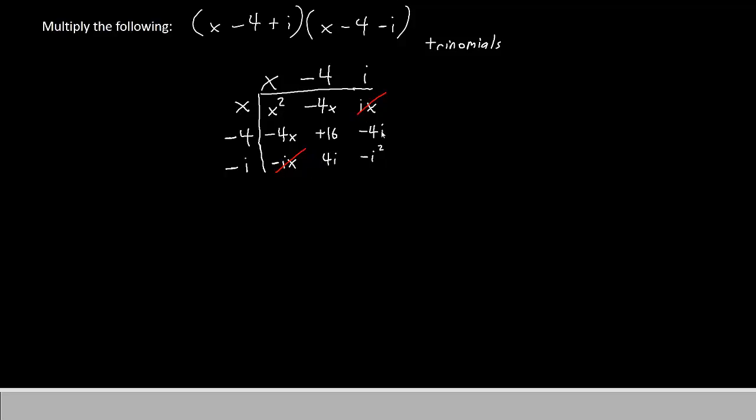For the same reason, the negative 4i on the right side will cancel out with the positive 4i on the bottom. Already looking a little better.